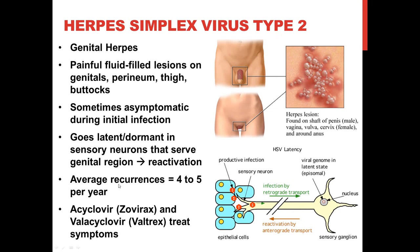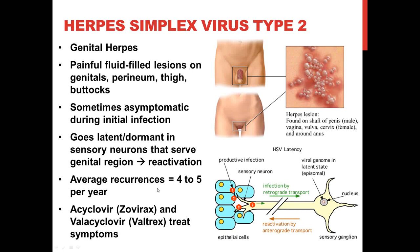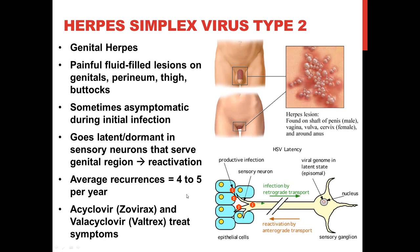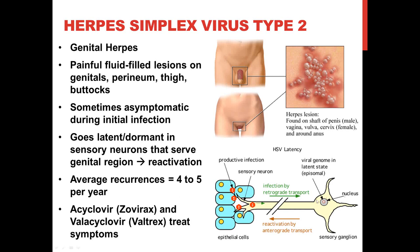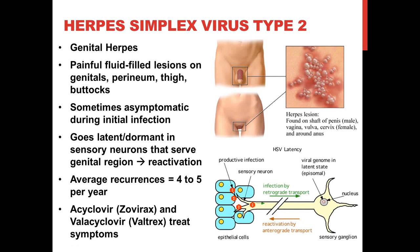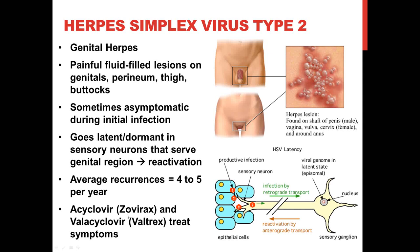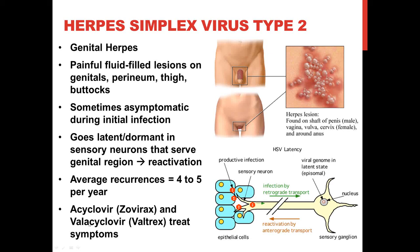These are called recurrences. In some people they don't happen very frequently; in others, they happen about four to five times per year. There really is no cure for herpes simplex virus type 2 — once you've got it, it's able to go dormant in your sensory neurons and hang out there indefinitely. But there are drugs used to treat symptoms of these outbreaks: acyclovir, trade name Zovirax, and valacyclovir, trade name Valtrex.